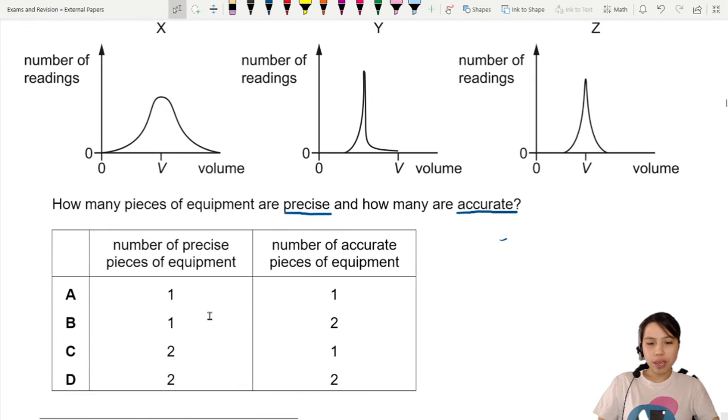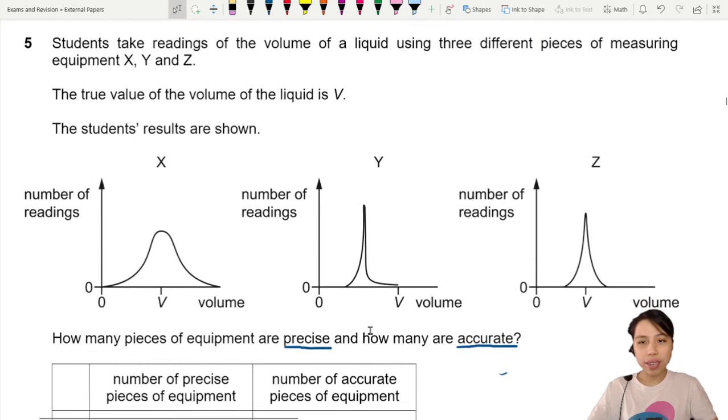And we got a bunch of numbers precise and accurate. How do we know? You need to know what does precise and accurate mean?